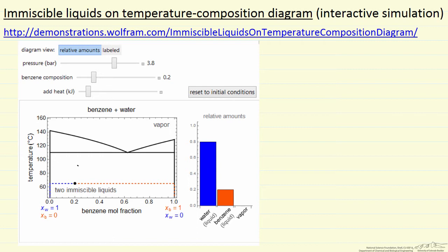So for a mixture of the two liquids, where the overall mole fraction, even though they're separate liquids, if we just calculate the overall mole fraction as 0.2, this corresponds to 20% benzene, 80% water.